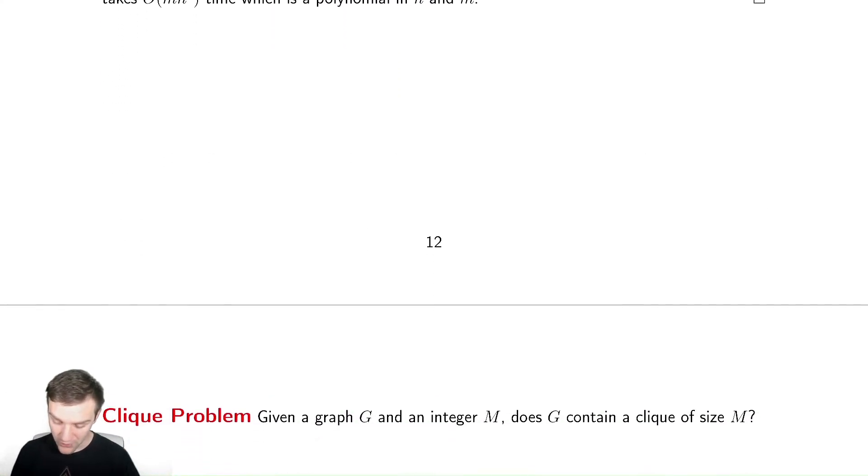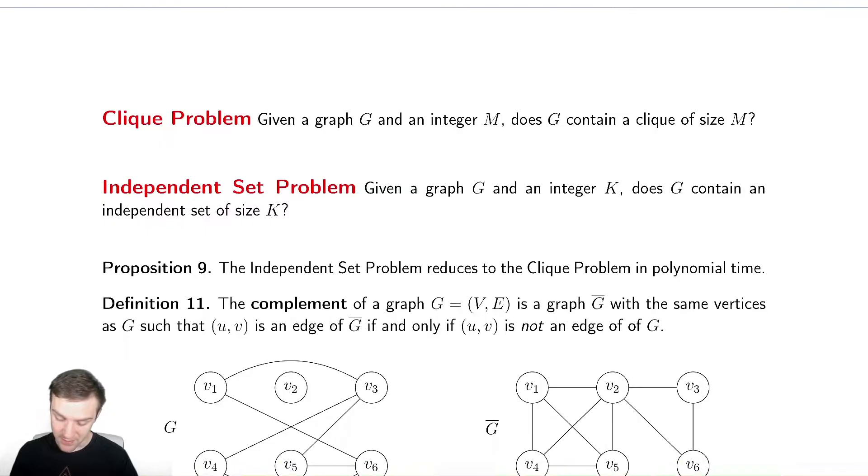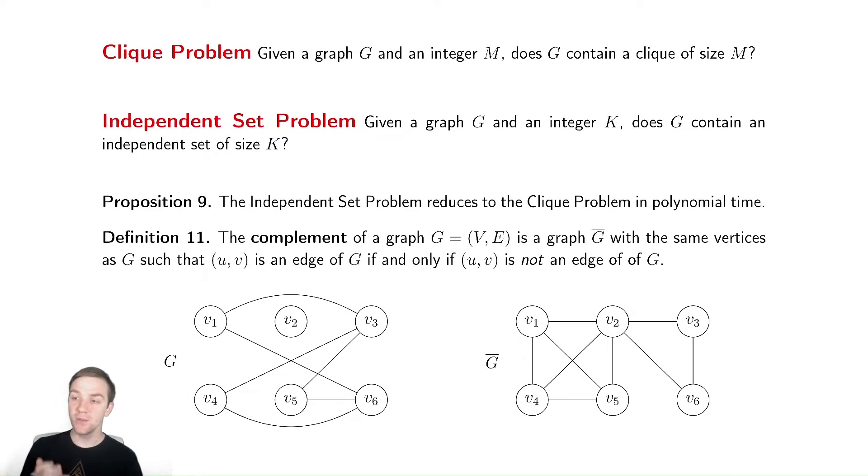So our first definition is going to be a complement. We're going to want a definition to talk about how the clique and the independent set seem similar, the act of having edges and not having edges. The thing we're going to talk about is the graph complement.